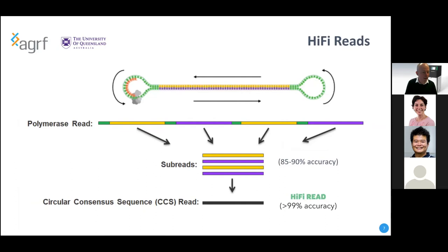HiFi reads are a really big improvement driving projects at the moment. Instead of just focusing on sequencing the longest read you can, you're going around your SMRT bell multiple times to increase accuracy. While you're sacrificing some read size, the improvement in accuracy can be quite striking. We're still looking at fragment sizes of around 15 to 20 kb. The subread data is fairly sizable, but the consensus CCS read is a much smaller, more focused, information-dense dataset. You're getting accuracy approaching Illumina read accuracy, and I think that's a real game changer.